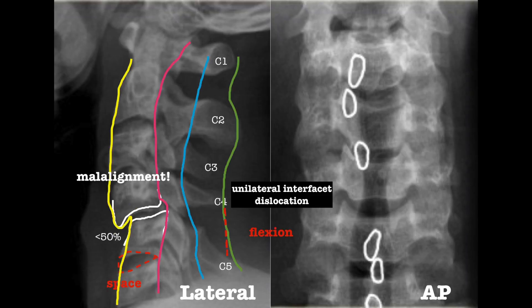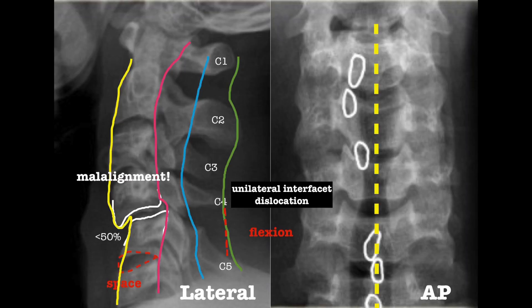Reviewing this X-ray: the C7-T1 junction is poorly visible. There is mild malalignment of less than 50%, suggesting a unilateral interfacet dislocation. There is hyperflexion at C4-5 with widening of the interspinous space. There is no obvious fracture or features of compression. There is increased disc space between C5 and C6, and the atlanto-occipital distance appears normal. On AP view, there is mild malalignment of the spinous processes, which can only occur due to a rotatory force. On the lateral view, note that the spinous processes of C3 and C4 appear short because of this rotation.